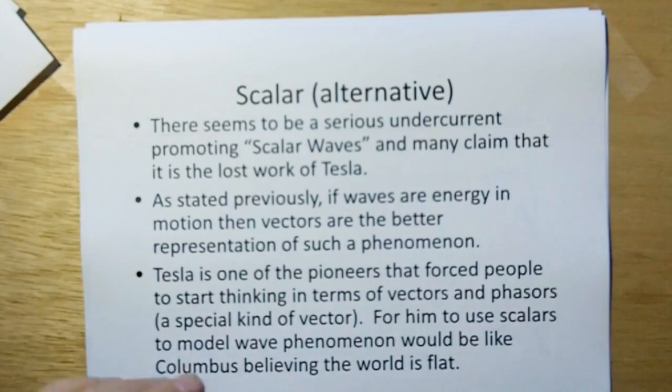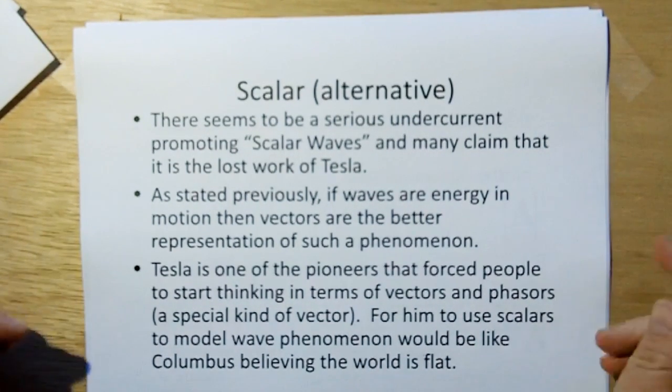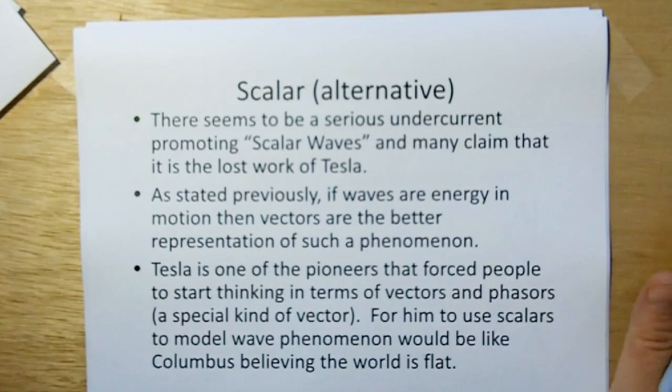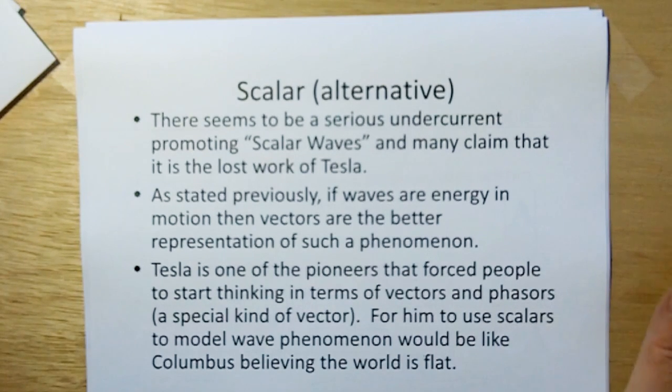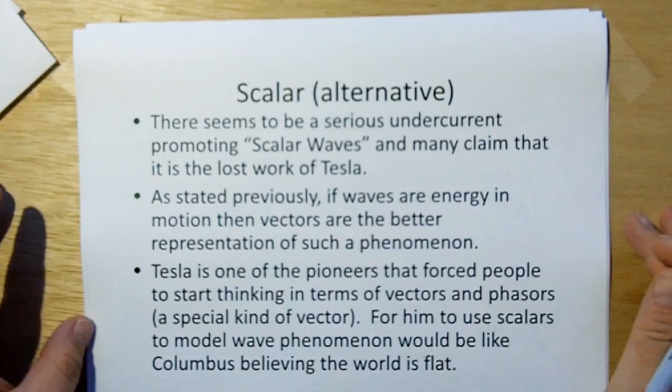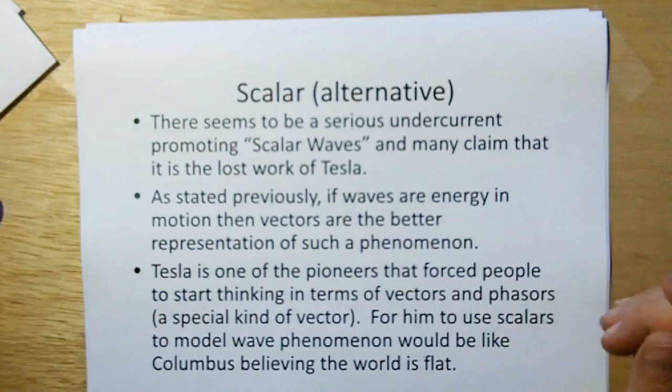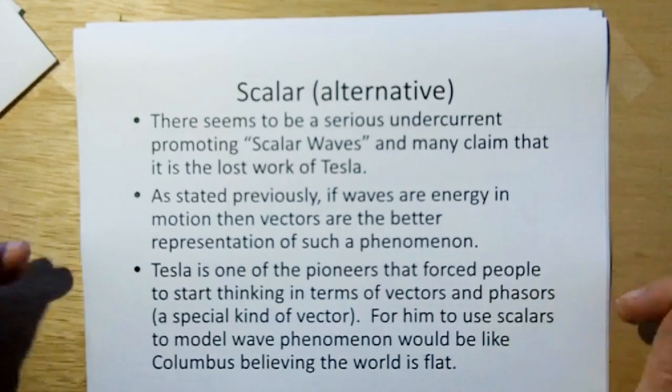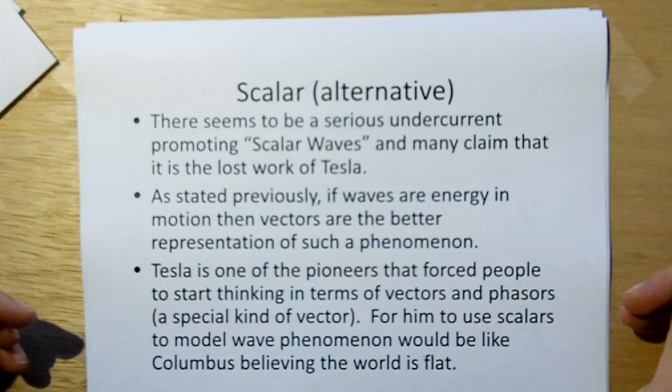There's also the use of the word scalar out there by various, it's a serious undercurrent of people promoting scalar waves that many claim is the lost work of Tesla. As stated previously, if waves of energy are in motion, then vectors are the better representation of the phenomenon. And Tesla is one of those pioneers that forced people to start thinking in terms of vectors and phasors. Phasors are just a special kind of vector which uses complex numbers. And a phasor and a quaternion are of the same family. And for him to use scalars to model wave phenomenon would be like Columbus believing the world is flat. It doesn't make sense. So these people that are saying that Tesla invented scalar waves is a load of nonsense. There might be a scalar energy distribution, but once that energy distribution goes into motion, it's a vector baby. Trust me.